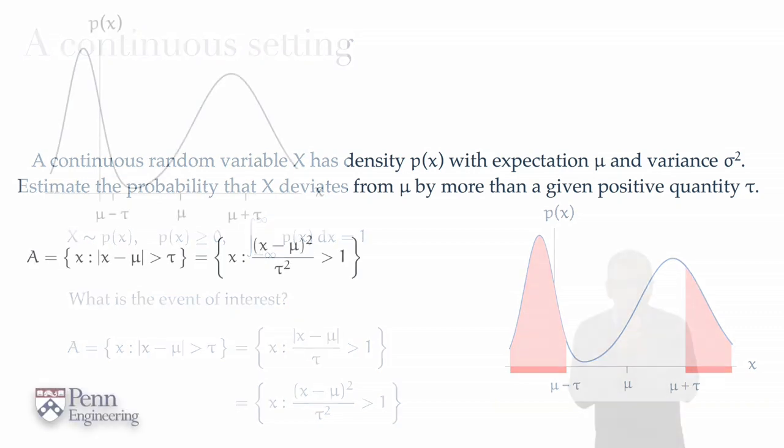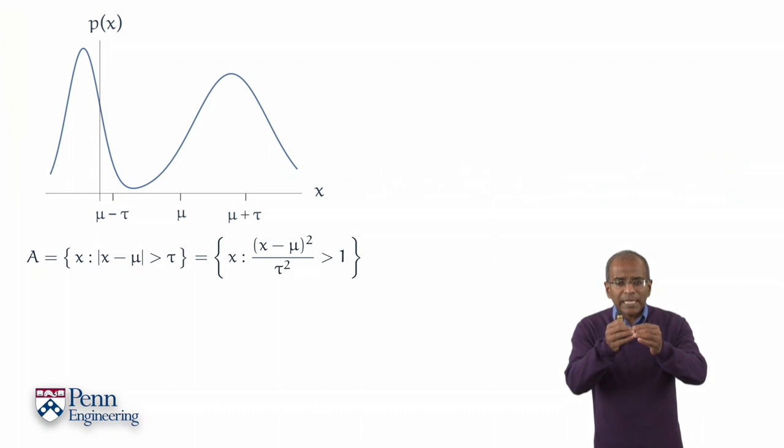Let's start with this. Recall, we are dealing with a real line sample space, and the event of interest deals with a deviation from a mean value. The region x for which x minus mu squared over tau squared exceeds 1. We now have to compute a probability.